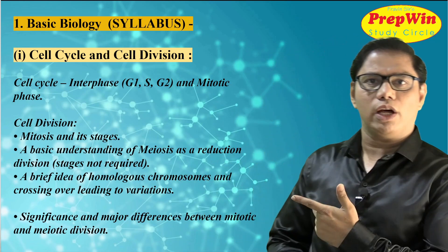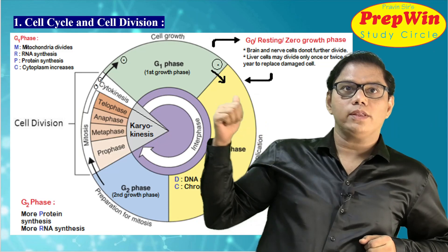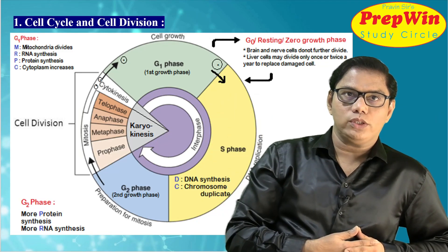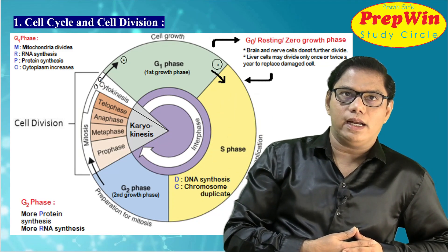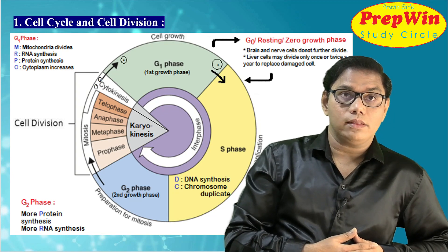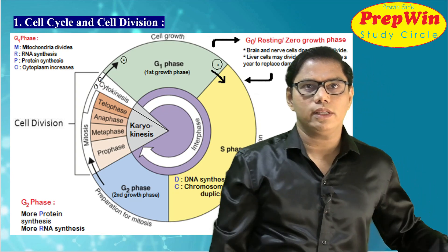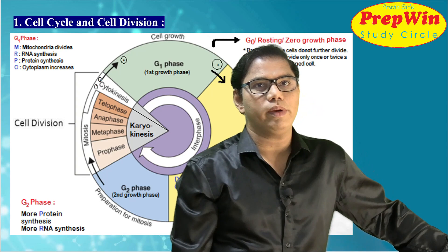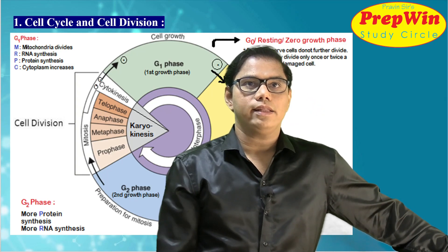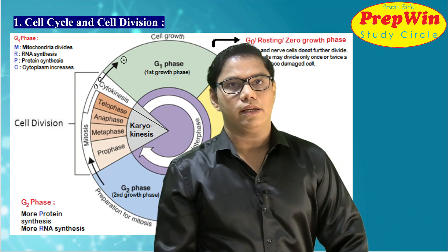As always, first have a look at the scope of the syllabus. So this is what we are going to learn today. This diagram shows cell cycle and cell division. Look at the diagram — it is going to be very easy. Understanding this diagram is understanding the cell cycle.